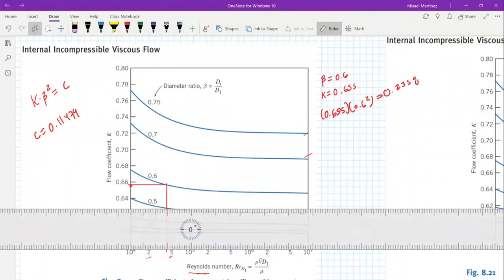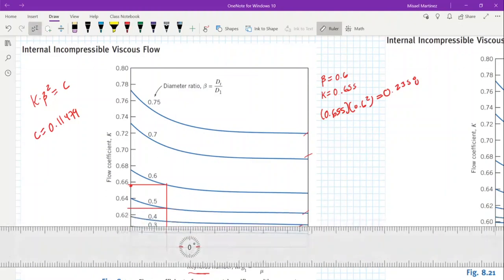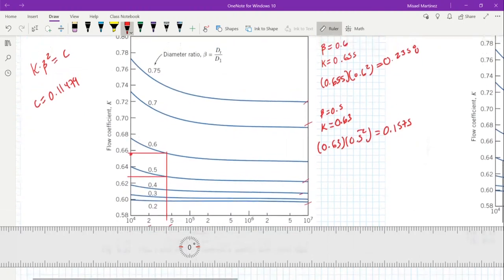What we do right now is then we go to a lower beta or a higher depending if your number was smaller or bigger. In this case, since we are above the number, we're going to go to a lower beta. Let's try a beta of 0.5. Beta equals 0.5 now, and the corresponding K will be about 0.63. 0.63 times 0.5 squared gives us 0.1575. You can see we are getting close, but we are still off.